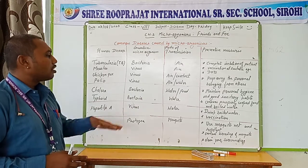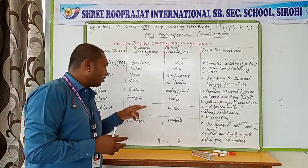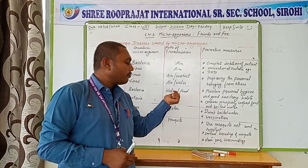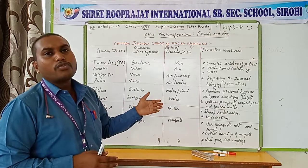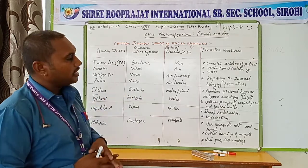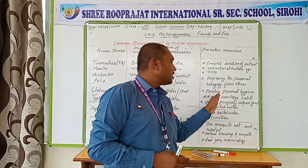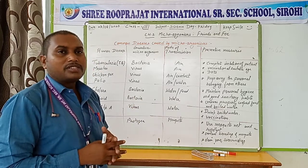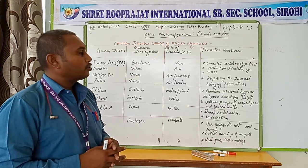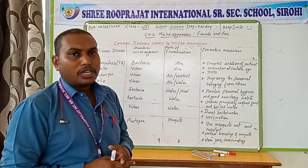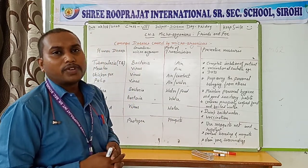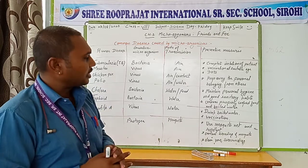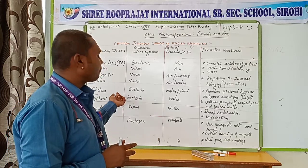Cholera is a disease caused by the bacteria Vibrio cholerae. This bacteria can be present in contaminated food or water. If a person takes contaminated food or water, they can suffer from cholera. The preventive measures are to maintain personal hygiene and good sanitary habits — the toilets used by the patient should be cleaned, and after using the toilet we should wash our hands and body parts with clean water and soap.